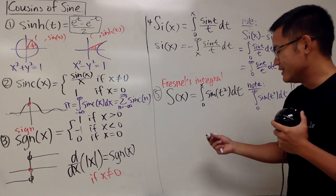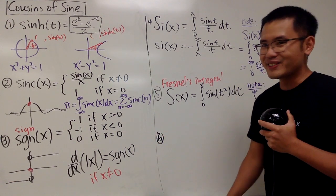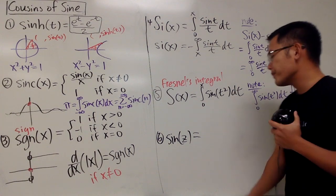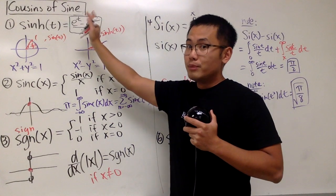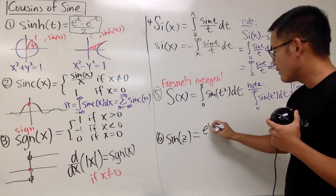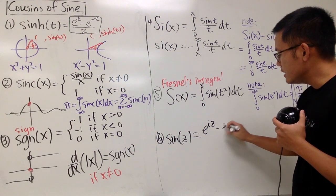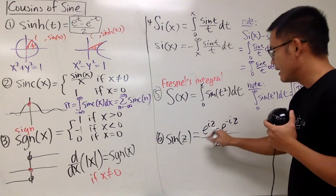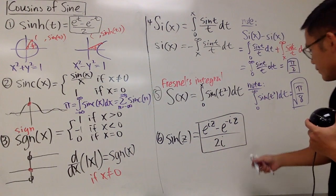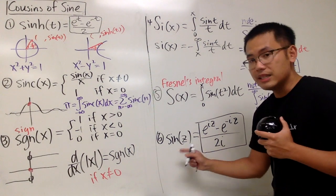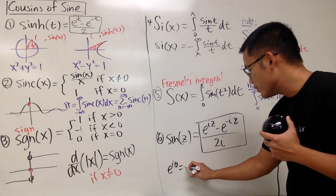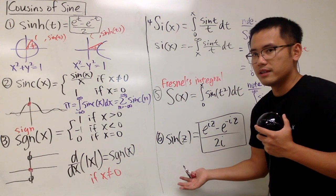As an honorable mention, this is the complex version of the sine function. Whenever you have sine of z, where z is a complex number, it looks very similar: e to the iz minus e to the negative iz, all over 2i. To prove this, we look at Euler's formula. We have e to the iz equals cosine z plus i sine z.